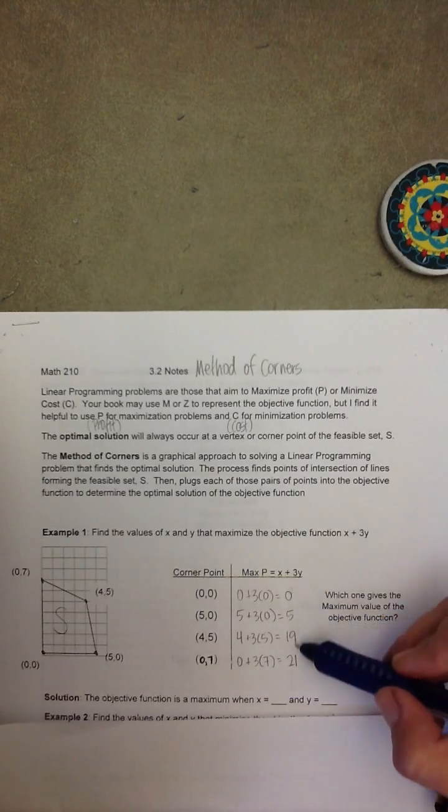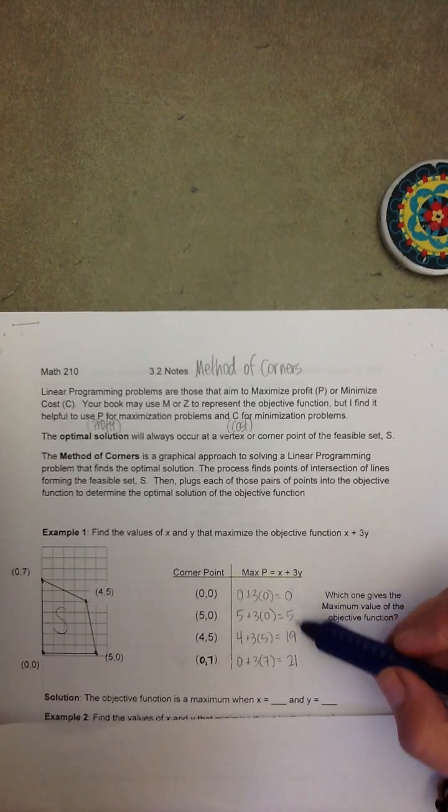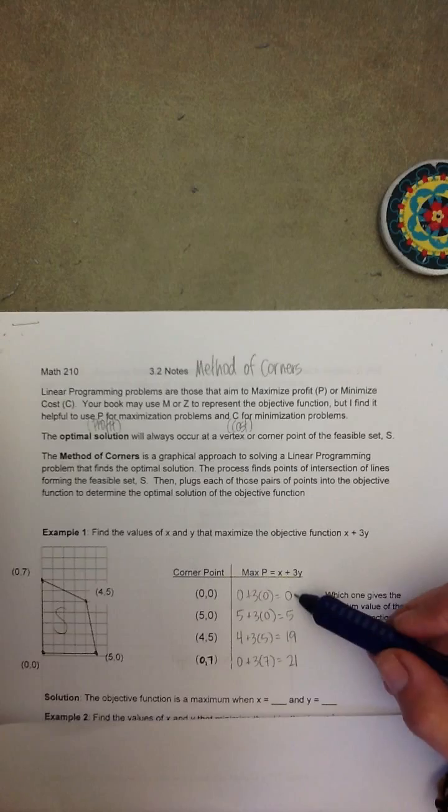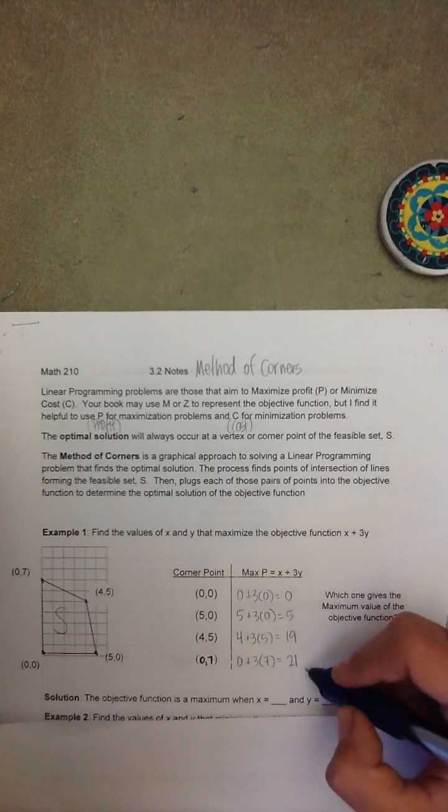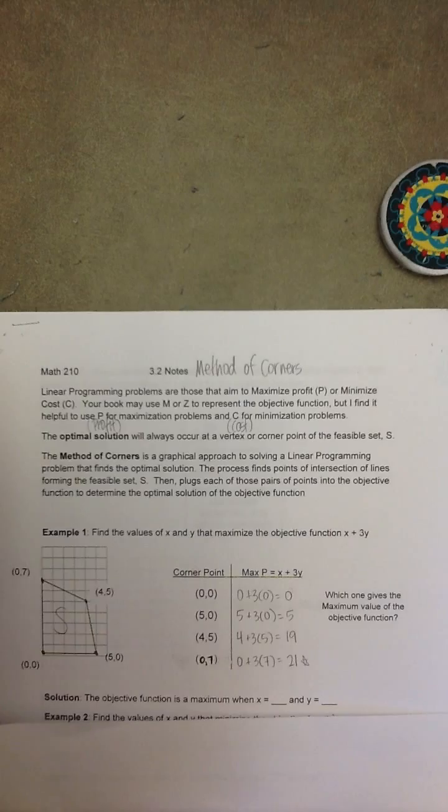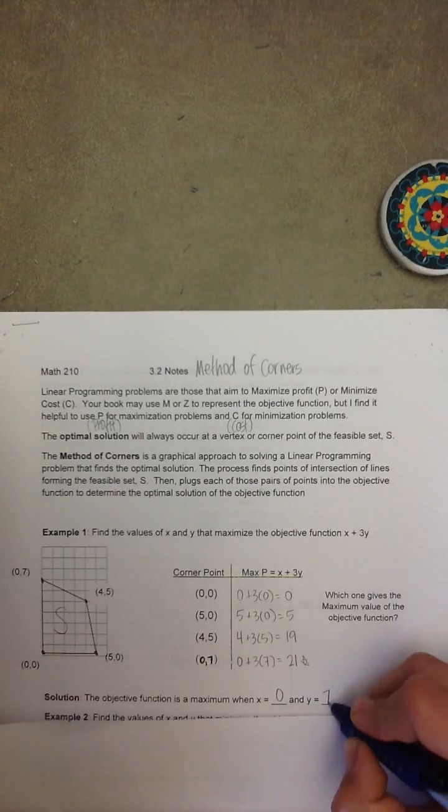So of these four objective function values that we received by plugging in the corner points, we have to pick out which one of them is the maximum. Obviously, the maximum value here is 21, and that is achieved when X is equal to 0 and Y is equal to 7.